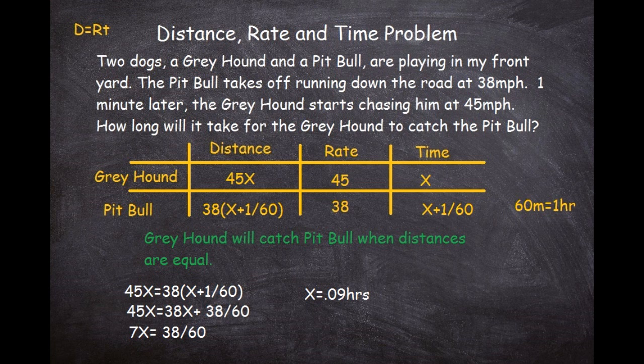So x, the time for the greyhound to catch the pit bull, is 0.09 hours. To convert to minutes, multiply by 60: 0.09 times 60 equals 5.4 minutes. Therefore, the greyhound will catch the pit bull in 5.4 minutes. I hope this explanation was clear — I'll bring you more distance-rate-time problems in the future. Be sure to click like and subscribe, and remember: if you always aim at legendary, you will land in success. I'm out.